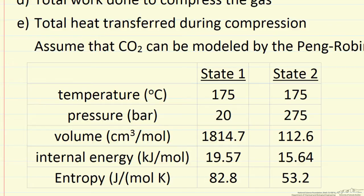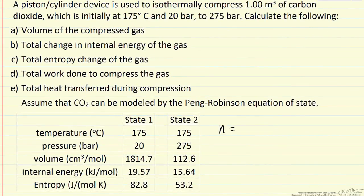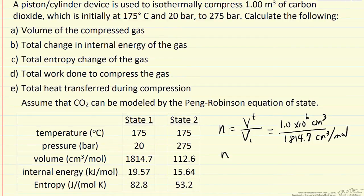We're interested in the final volume where we start with 1 cubic meter, a very large container. Since these are values of volume per mole, we need to determine the number of moles in our system. That's the first step, and the number of moles is not going to change. The number of moles is the total volume divided by the volume per mole when we start.